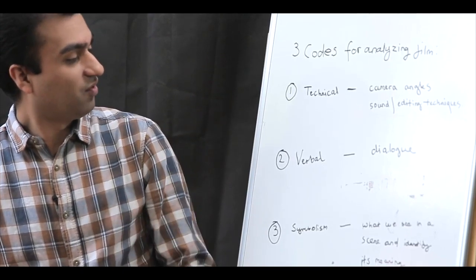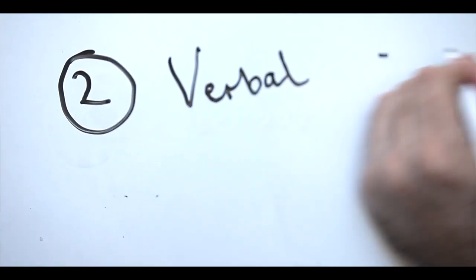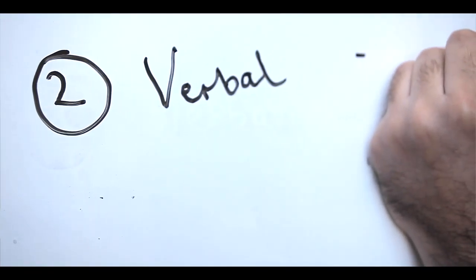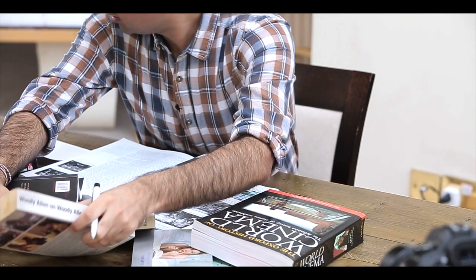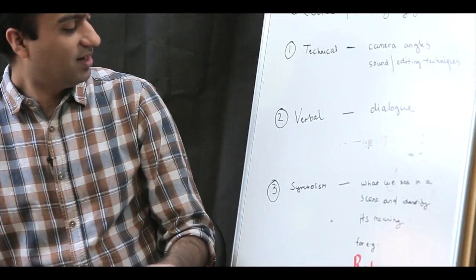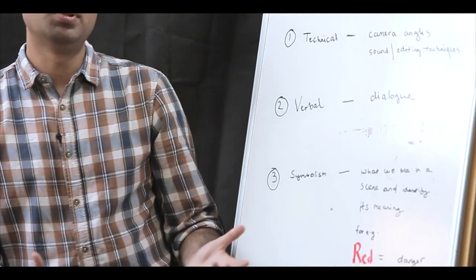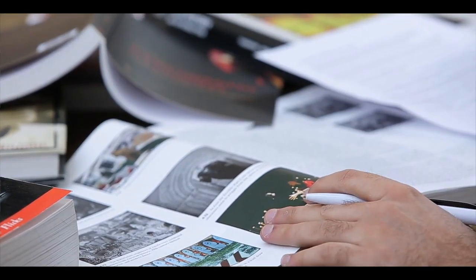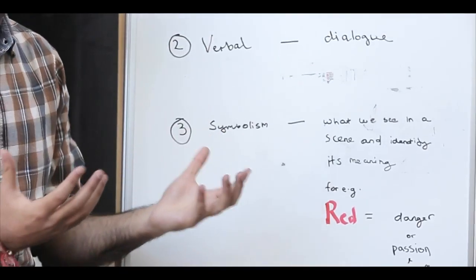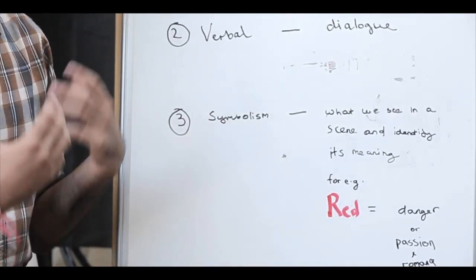Theorist Roland Barthes introduced three codes that can be identified and assessed within film. First off, we have the technical aspects, where we look at the camera angles, the sound and editing techniques.